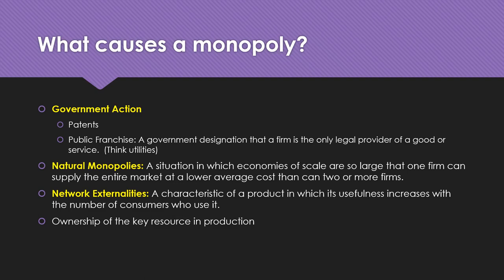Another way a monopoly can be created is through a network externality — a characteristic of a product where its usefulness increases with the number of people who use it. Thinking back to social media in high school: at that time MySpace was the dominant social network. Instagram didn't exist, Twitter barely existed having launched around 2006, and YouTube had been around for about three or four years.